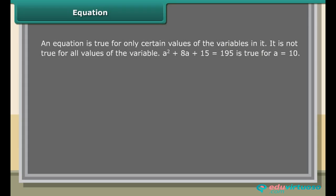Equation: An equation is true for only certain values of the variable — it is not true for all values. For example, a² + 8a + 15 = 195 is true for a = 10, but not for a = −1 or a = 0, etc.